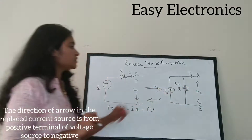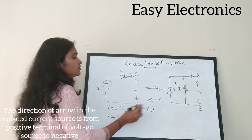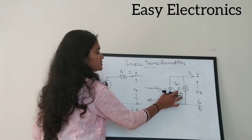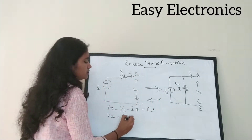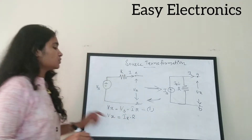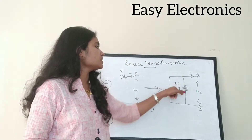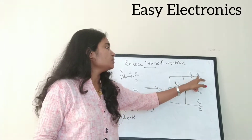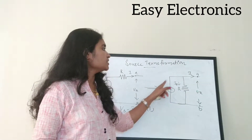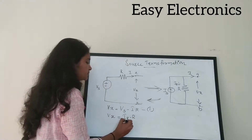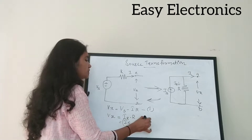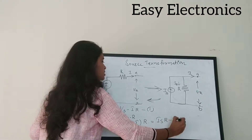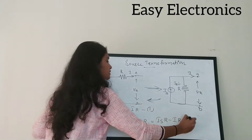Similarly, I am going to write the equation for Vx from the second network. Vx is nothing but the voltage drop across this resistor. I have considered the current flowing through this resistor as IR. So it is IR into the resistor value. Now IR equals the current coming from the source; some current flows through the resistor and the remaining goes to point A. So IR equals IS minus I. I can write it as (IS minus I) into R, which expands to IS·R minus I·R. So this is your second Vx — mark this as equation number 2.